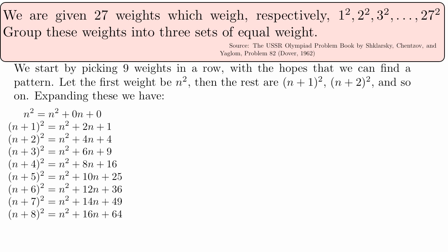If we want to split these up into 3 equal groups, then we have to make sure that the n variable, the n terms, those add up to all the same number. Let's look at all the n terms. That's 0n, 2n, 4n, 6n, 8n, 10n, 12n, 14n,